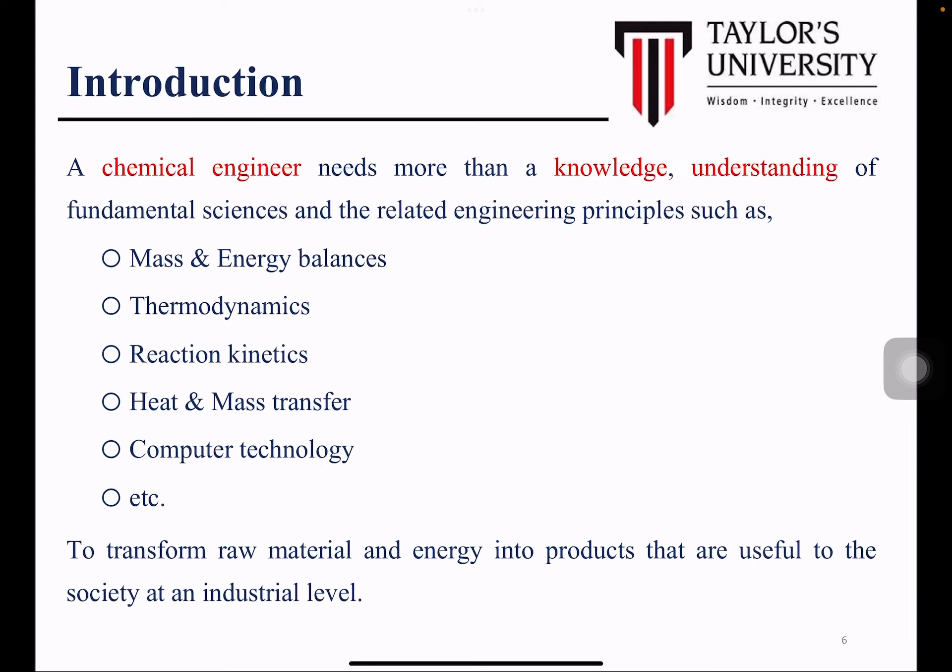Before you design a plant as a chemical engineer, you need a solid understanding of fundamental sciences learned from your early semesters through to the design module. Engineering principles you must know include mass and energy balance — very important — so you know how much mass goes in and comes out of your entire process, whether raw materials, supplementary materials, catalysts, or utilities, and how much energy is required for reactions and separation processes.